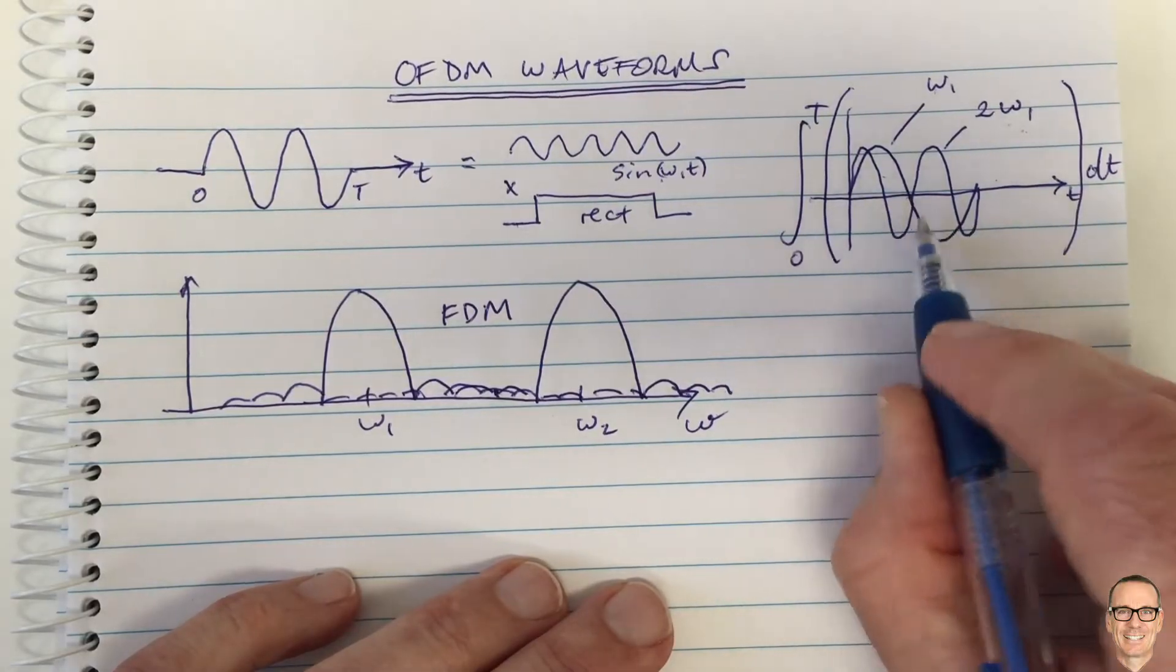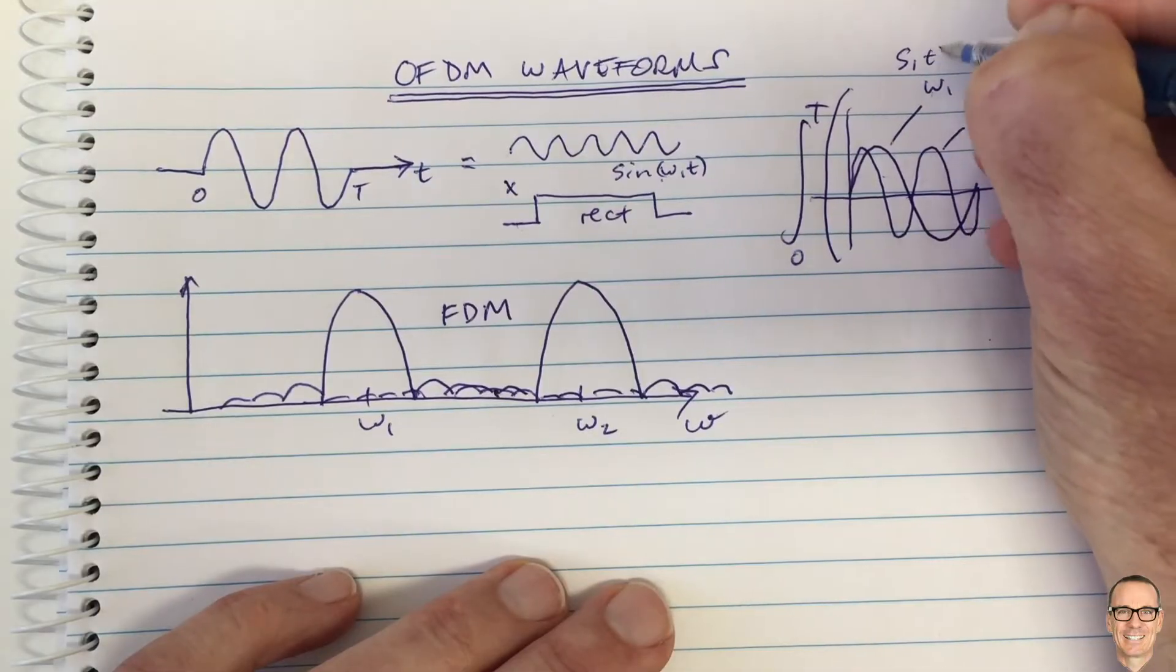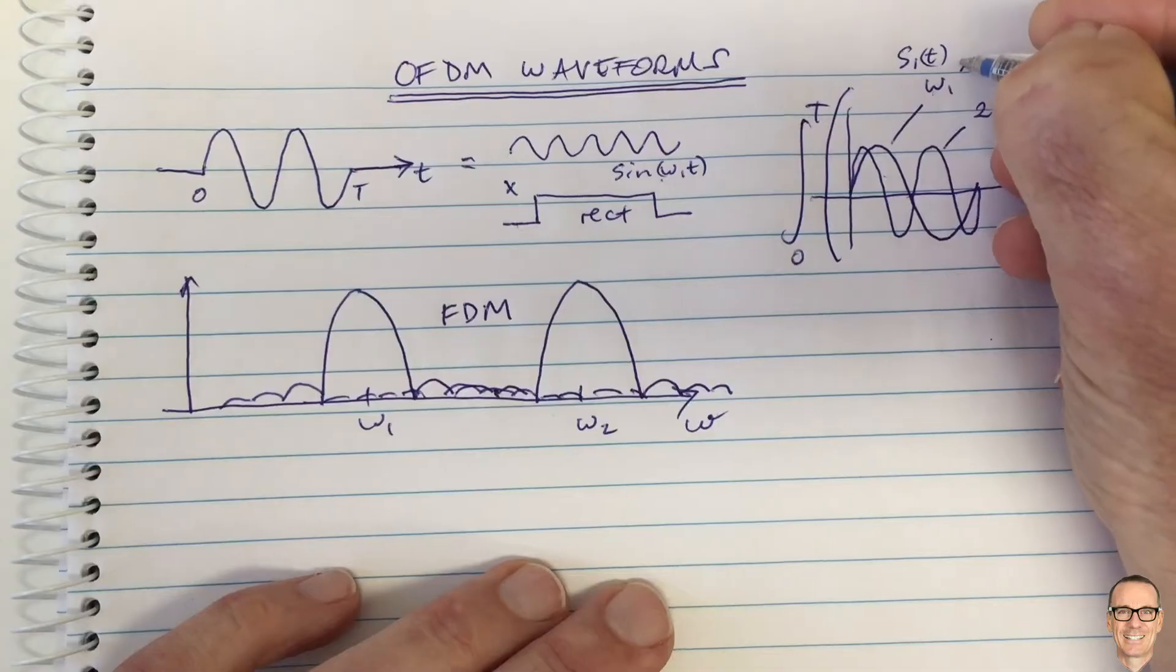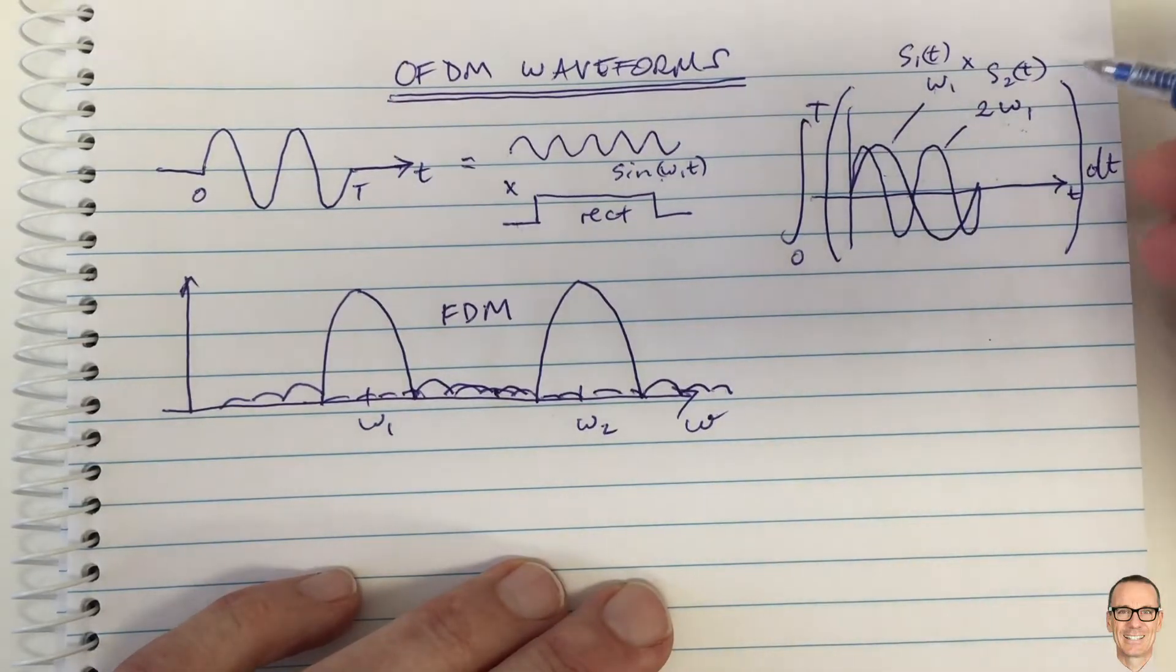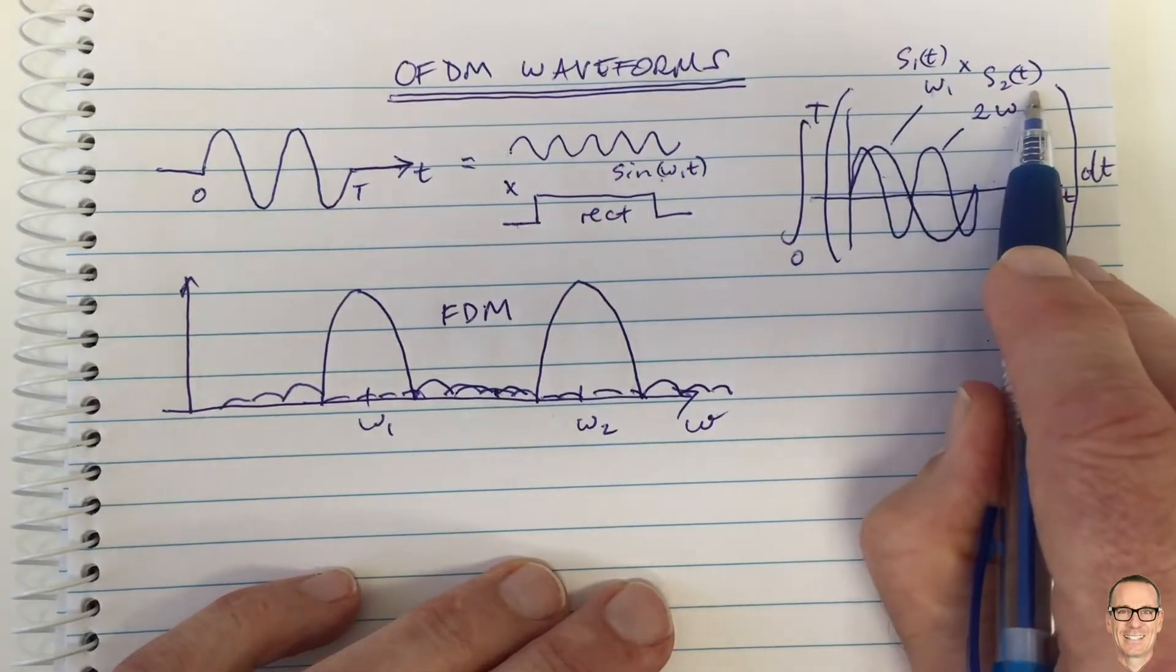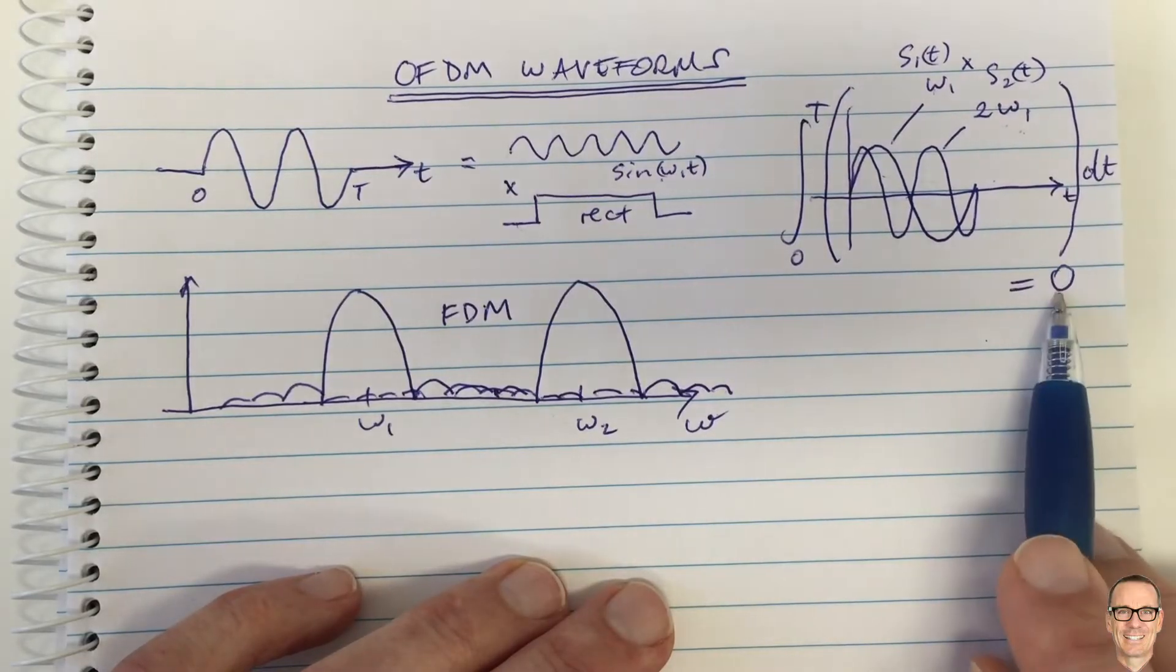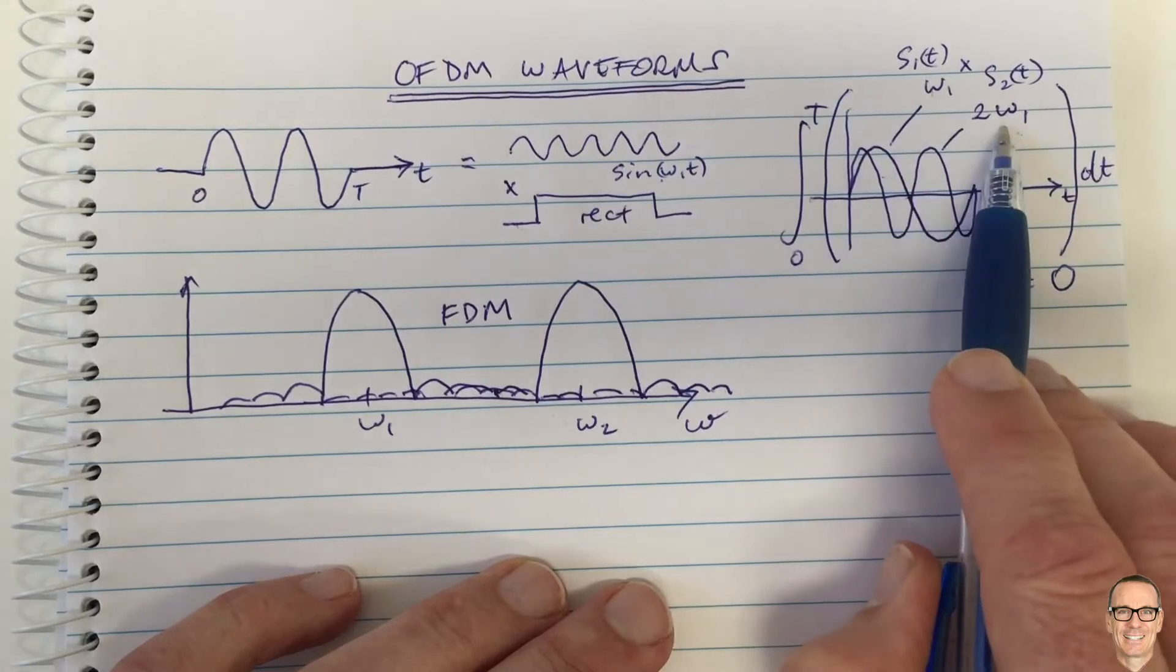So in this case the multiplication of S1, if this is signal 1 and this is signal 2, the multiplication of those two signals, which is what happens in the matched filter at the receiver, if you try to send signal 1 and you put it through the receiver of signal 2 for channel 2, then you're going to get nothing coming out because they're orthogonal because we've chosen them in this way.